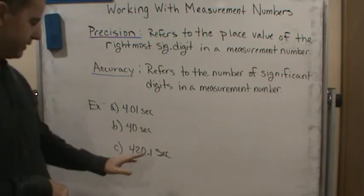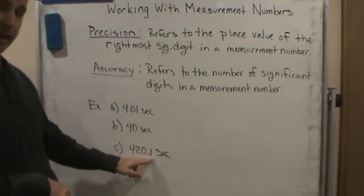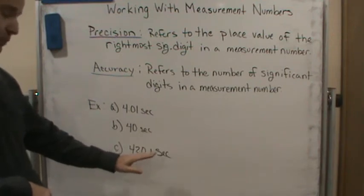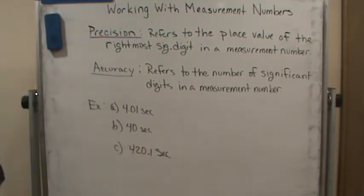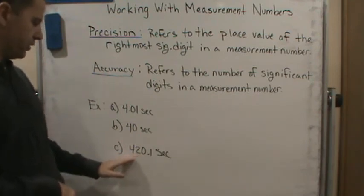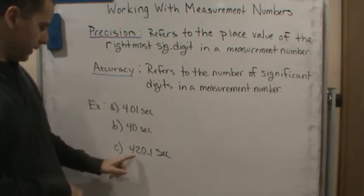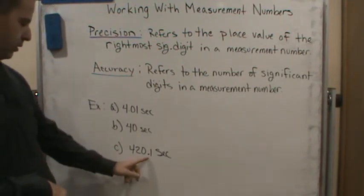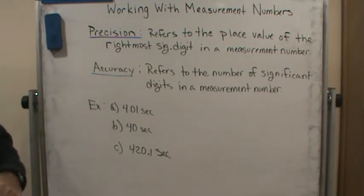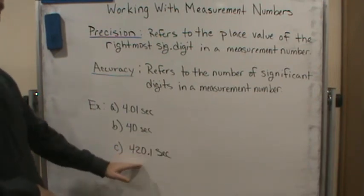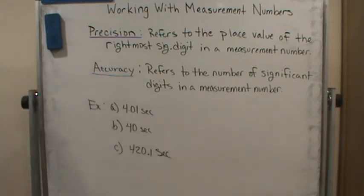For part C, this is precise to the tenth of a second — precise to one decimal place. As far as accuracy, this is accurate to four significant digits, because we have three non-zero digits and the zero falls between two significant digits, making it significant as well. So this is accurate to four significant digits.